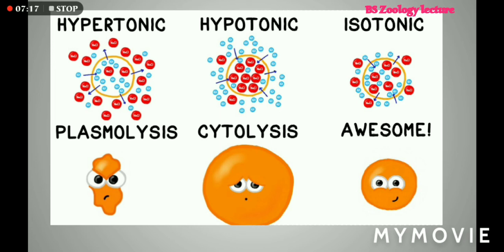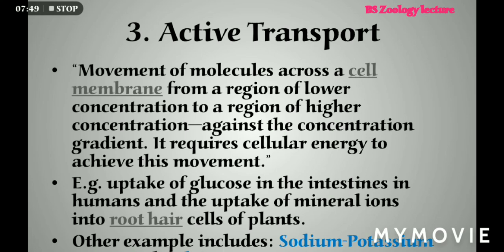So in isotonic solution, the outer and inner environments of the cell are balanced. Hypertonic solution results in cell shrinkage due to water molecules moving out, hypotonic solution results in cell swelling and possibly bursting, and in isotonic situation the cell is in a very good, stable condition.